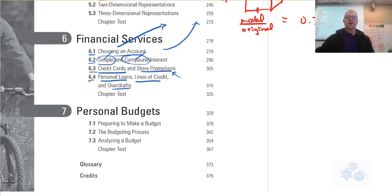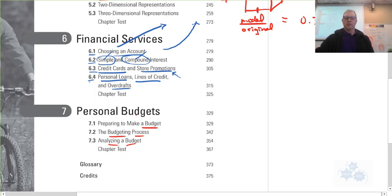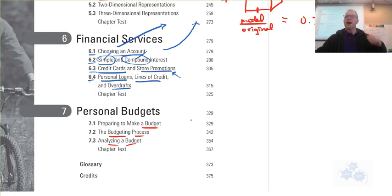And then, finally, this chapter you just came through, personal budgets. Making a personal budget, talking about the budgeting process and analyzing a budget. You just came through that, so I won't talk too much about that. But, budgeting and knowing the aspects of a budget are really important. Do any of you have any questions about the exam coming up or about what to study?